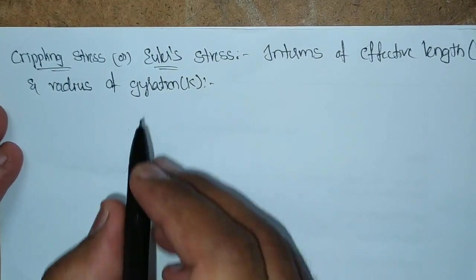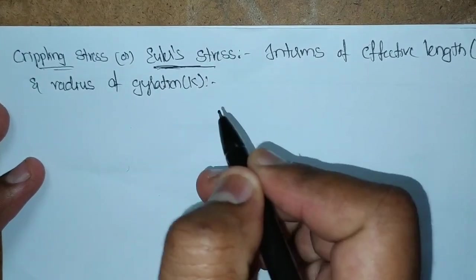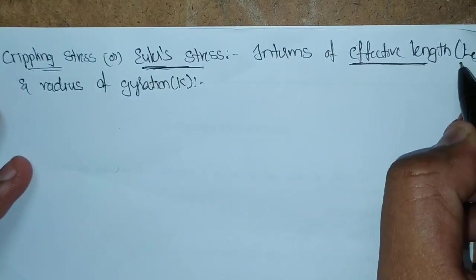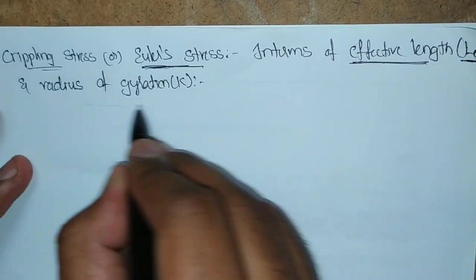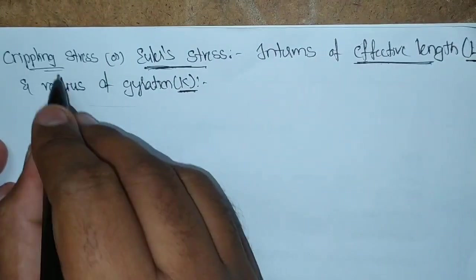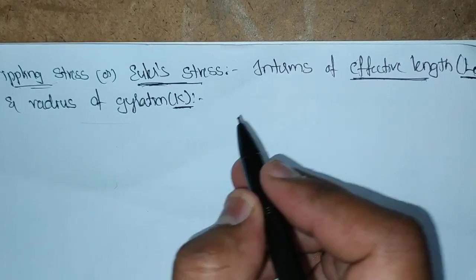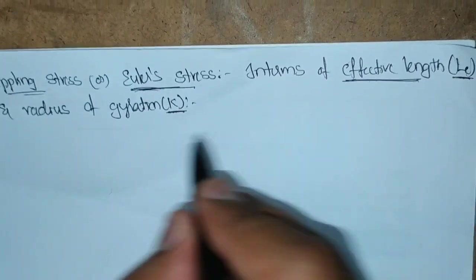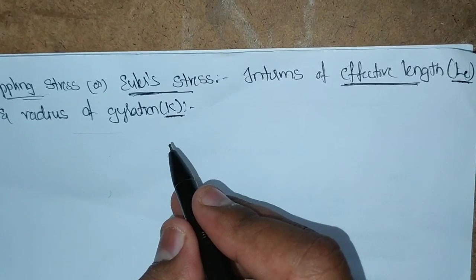Crippling stress is nothing but Euler stress. It can also be called as Euler stress in terms of effective length. Effective length is noted with LE and radius of gyration K. How this crippling stress and Euler stress is going to behave with respect to effective length and radius of gyration we have to find out today.